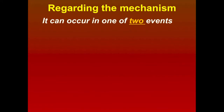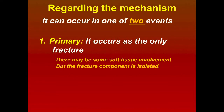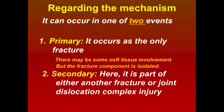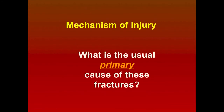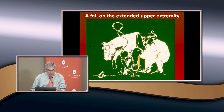The mechanism of radial neck fractures can occur in two ways. It can be a primary isolated injury, or secondary as part of another fracture or joint dislocation complex. The primary cause is a fall with the arm in extension — usually the non-dominant arm, because they're using their dominant arm to catch themselves. They put their arm in extension to break the fall. They don't break the fall; they break the elbow.